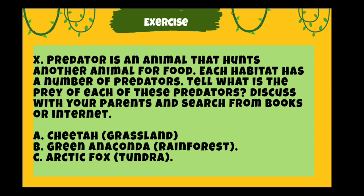Number ten: a predator is an animal that hunts another animal for food. Each habitat has a number of predators. Tell what is the prey of each of these predators — discuss with your parents and search from books or the internet. Examples: cheetah, which lives in grassland; green anaconda, which lives in rainforest; arctic fox, which lives in tundra.